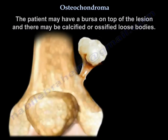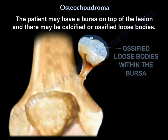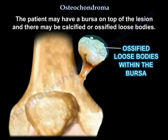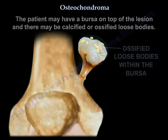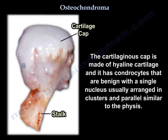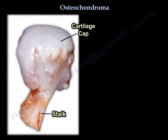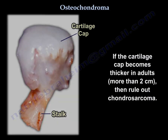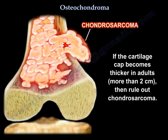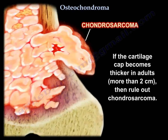The patient may have a bursa on top of the lesion, which may contain calcified or ossified loose bodies. The cartilaginous cap is made of hyaline cartilage with benign chondrocytes having a single nucleus, usually arranged in clusters in parallel, similar to the physis. If the cartilage cap becomes thicker than 2 cm in an adult, rule out chondrosarcoma.